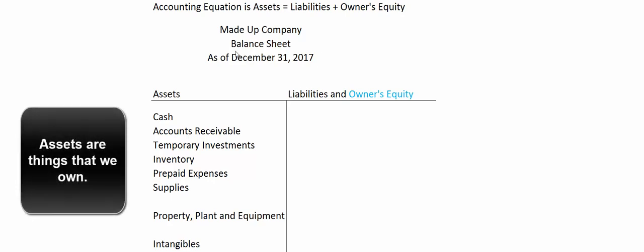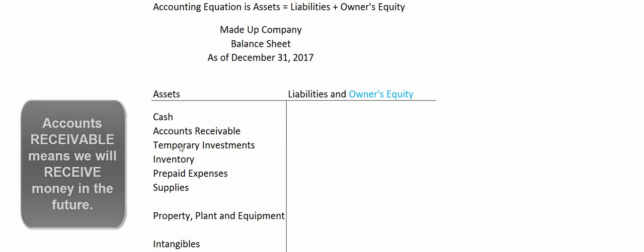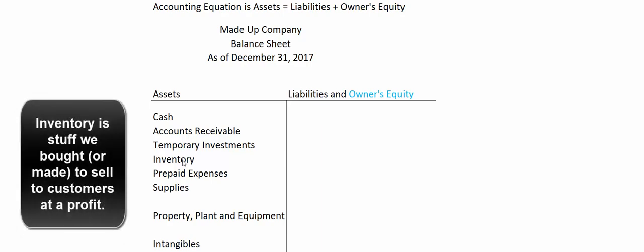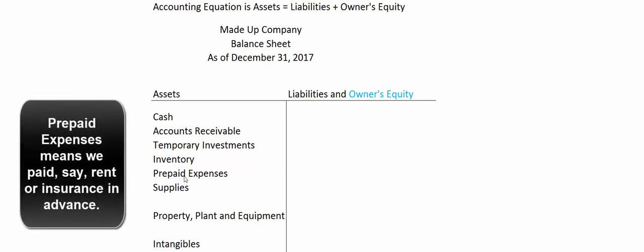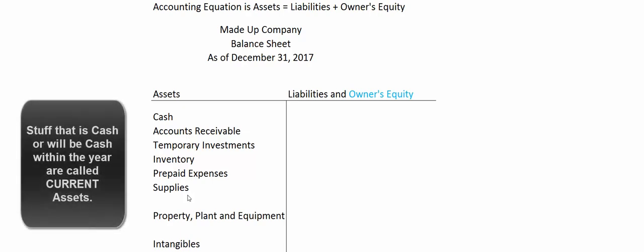Here's a typical balance sheet — a snapshot as of December 31st, 2017. This company owned cash, accounts receivable, temporary investments, inventory, prepaid expenses, supplies, property and equipment, and intangibles. Those are assets — things that we own. Accounts receivable means we've done the work, sent out a bill, and we're waiting to get paid. Temporary investments means we had extra cash and invested in stocks and bonds of other companies. Inventory is stuff we bought that we intend to sell. Prepaid expenses means we paid rent or insurance in advance — an asset we'll use up over time. Supplies are items in the supply closet that will last a long time.